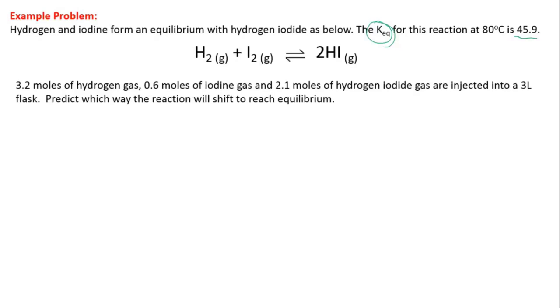And we're told that in a 3 litre flask, we have 3.2 moles of hydrogen, 0.6 moles of iodine, and 2.1 moles of hydrogen iodide gas. They're put into that flask. We have to predict which way the reaction is going to have to shift to reach equilibrium.